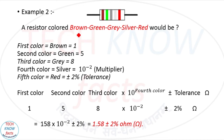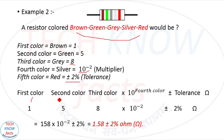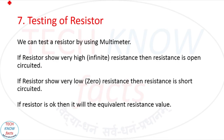For a 5-band resistor, the first three colors are digits, the fourth is the multiplier, and the fifth is tolerance. Example: a resistor colored brown, green, gray, silver, red — brown = 1, green = 5, gray = 8, silver = multiplier 10^-2, red = ±2% tolerance. So the value is 158 × 10^-2 = 1.58 Ω ±2%.